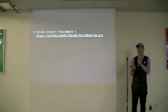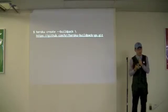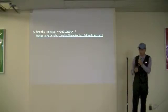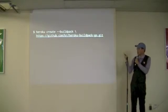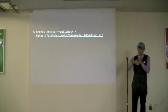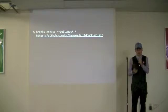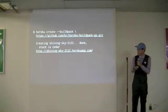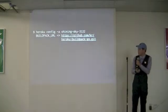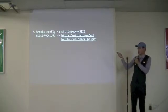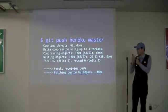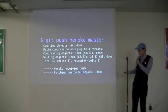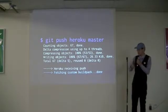Keith Rarick at Heroku built a Go language pack that is similar to the Ruby one but sets everything up for Go. When you run 'heroku create', there's a '--buildpack' flag where you can specify any git repo — a GitHub URL or any URL — and as long as that repo has the detect, compile, and release scripts, it'll work. After that you get a URL from Heroku, you can check the config var and see the buildpack URL is set, and when you push you'll see a line that says it fetches the custom build pack and proceeds through the normal push process.